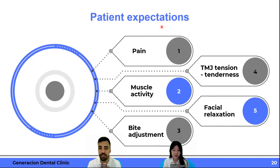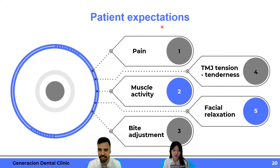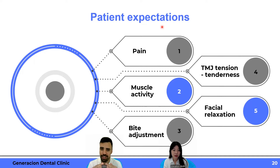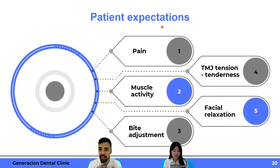What if the patient has symptoms with the deprogrammer? They can experience pain because of the load applied to the joints. If they have any pain, ask them to remove it, come back to the clinic, and consider changing to a full coverage splint. If joints are not healthy, that's a different part of the presentation — those are really complex cases and we may need to refer those patients to a specialist.